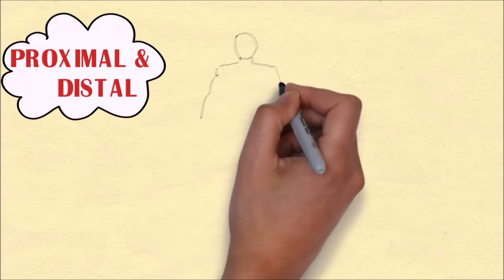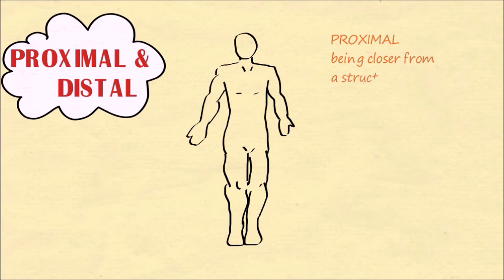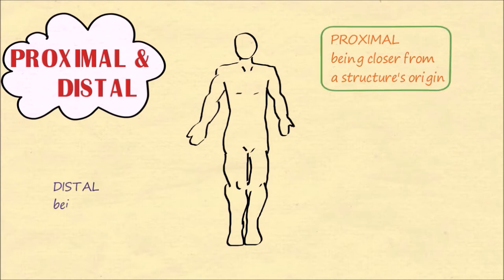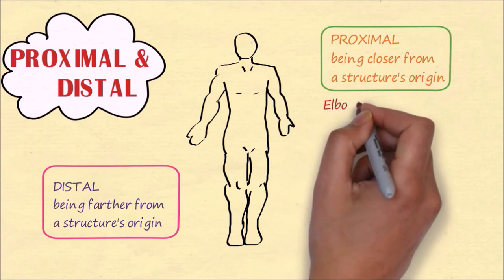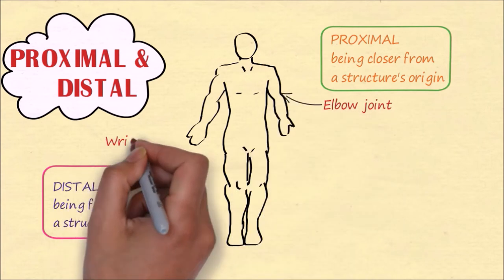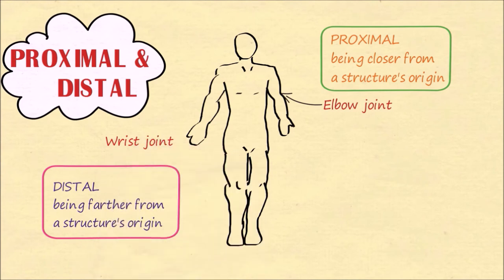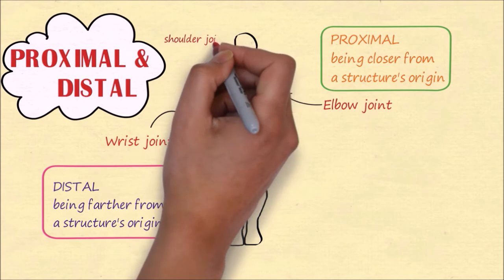The terms proximal and distal are used particularly in the limbs. Proximal means closer to a structure's origin or root. For example, the elbow joint is proximal to the wrist joint. Taking the shoulder as reference, the shoulder joint is proximal to both the elbow joint and the wrist joint.